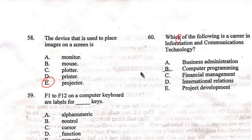Question 60, the last question for today: 'Which of the following is a career in information and communications technology?' Options are: A) business administration, B) computer programming, C) financial management, D) international relations, E) project development. You can have a career in business administration, financial management, international relations, or project development, but the career specifically in information and communications technology is B, computer programming. That is our answer.